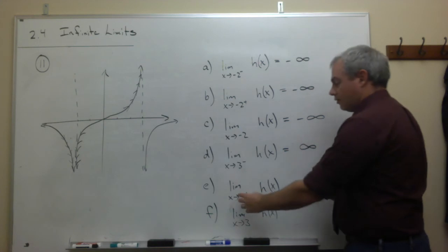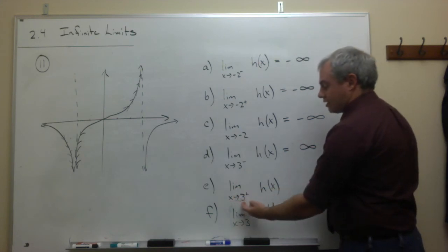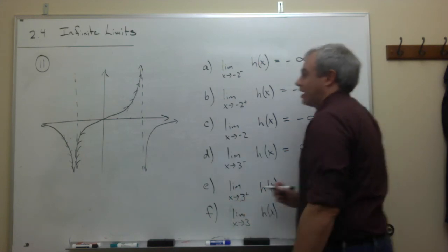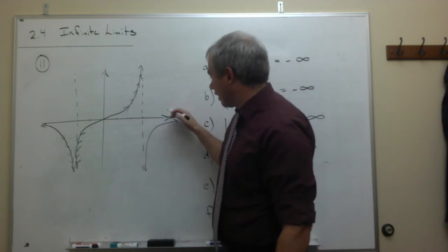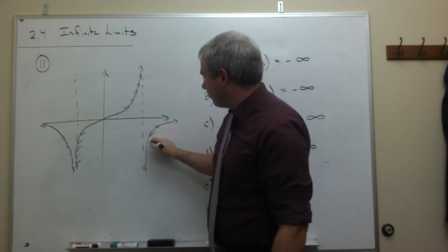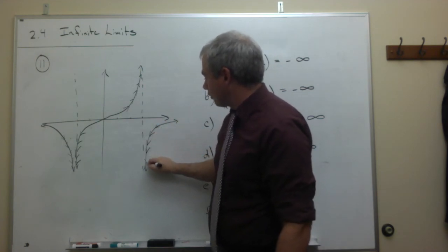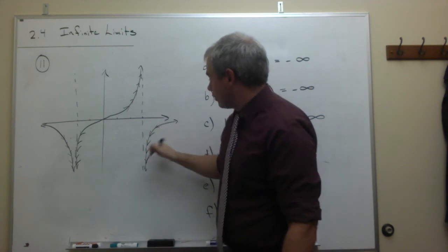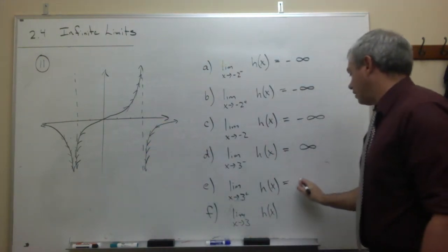Part E: we have the limit as x goes to 3 from the right of h of x. From the right, we're moving along this graph getting closer and closer to 3. It's going down to negative infinity.